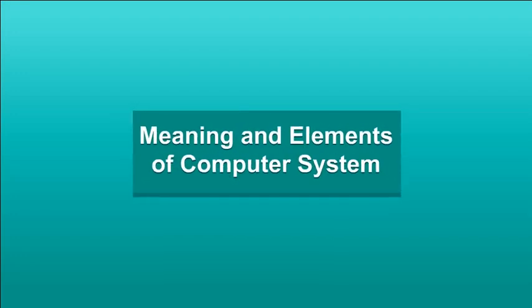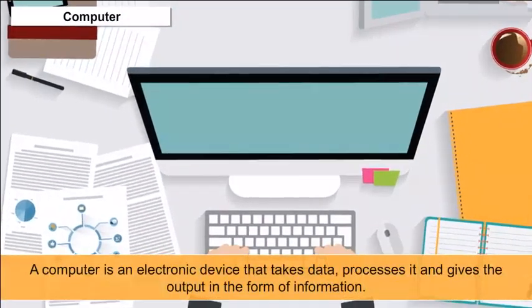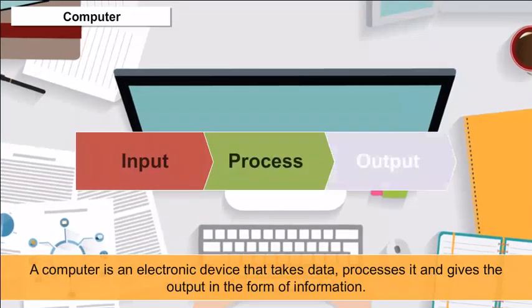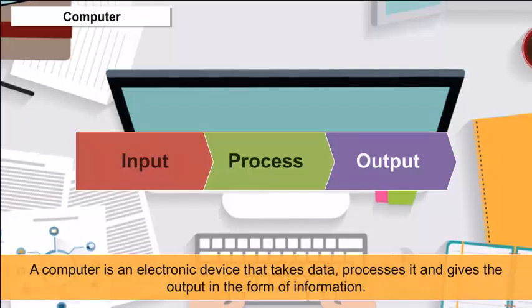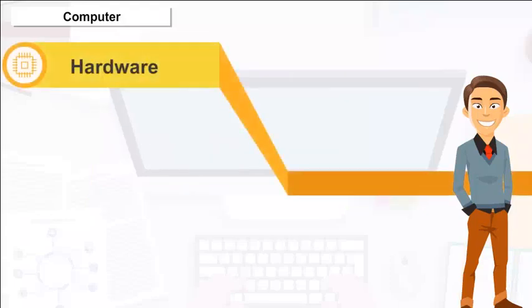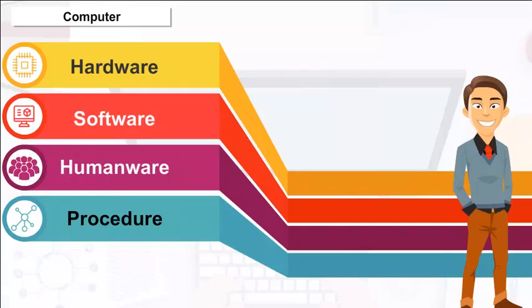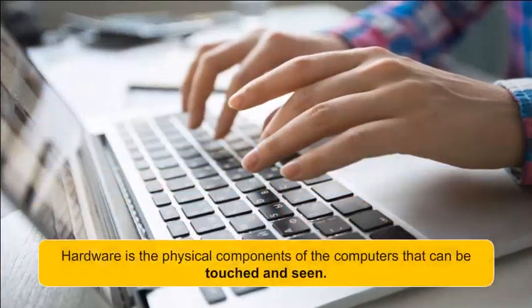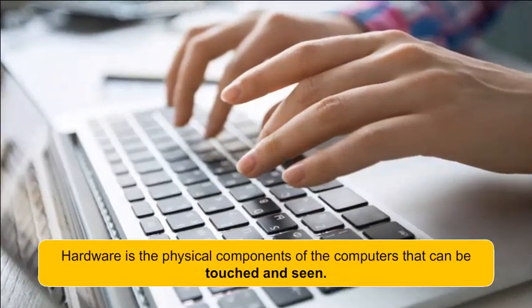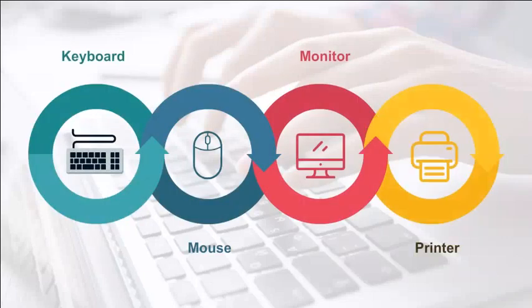A computer is an electronic device that takes data, processes it, and gives output in the form of information. A computer system consists of various elements: hardware, software, humanware, procedure, and data. Hardware is the physical component of computers that can be touched and seen — for example, keyboard, mouse, monitor, printer, etc.